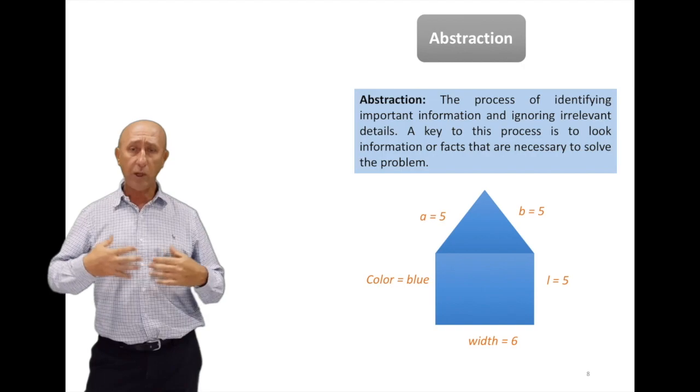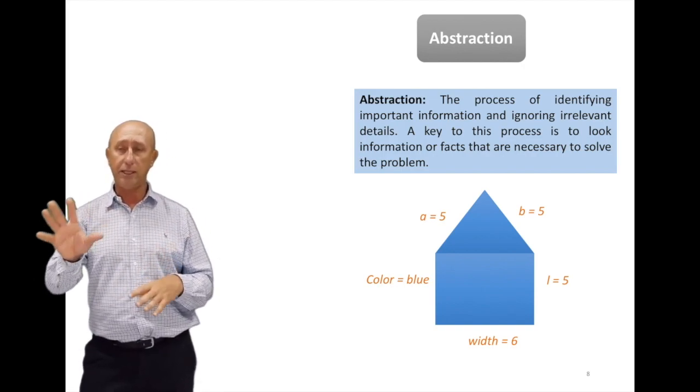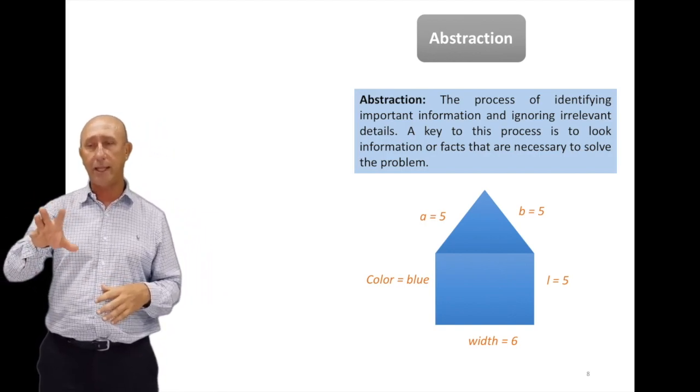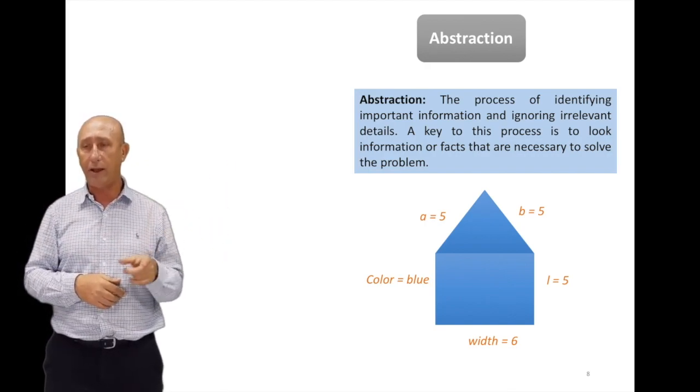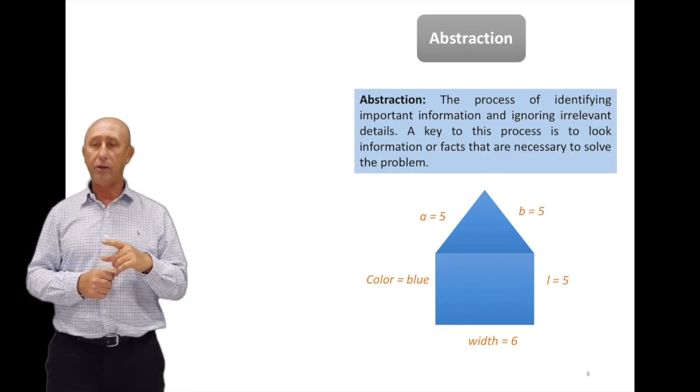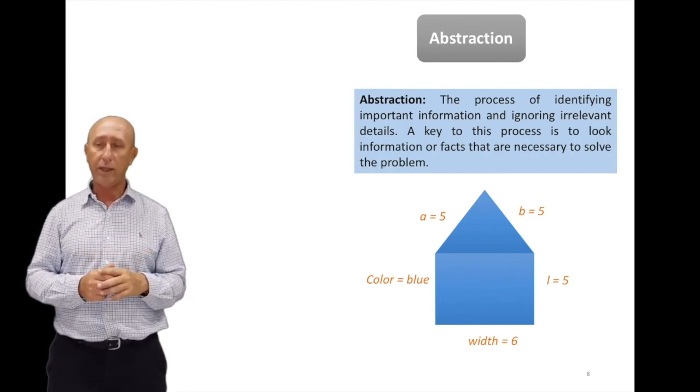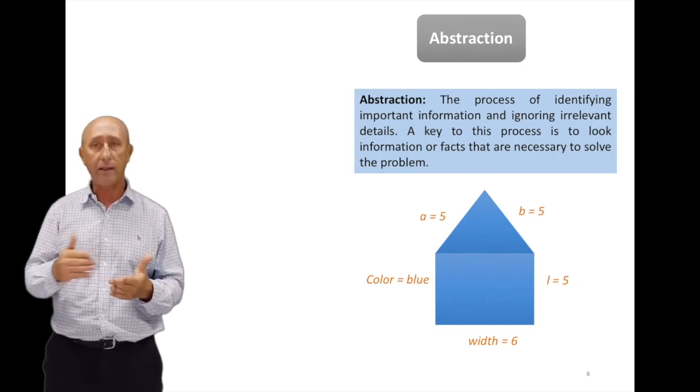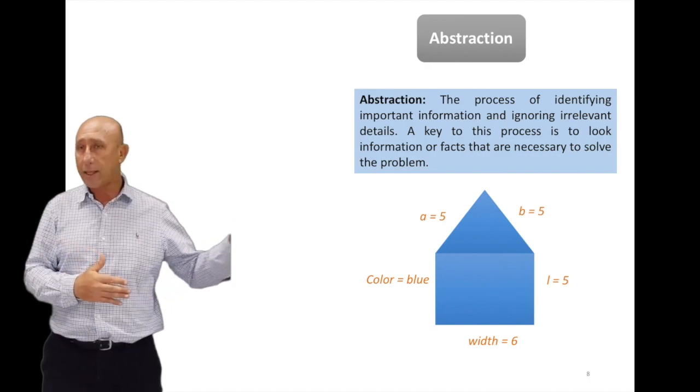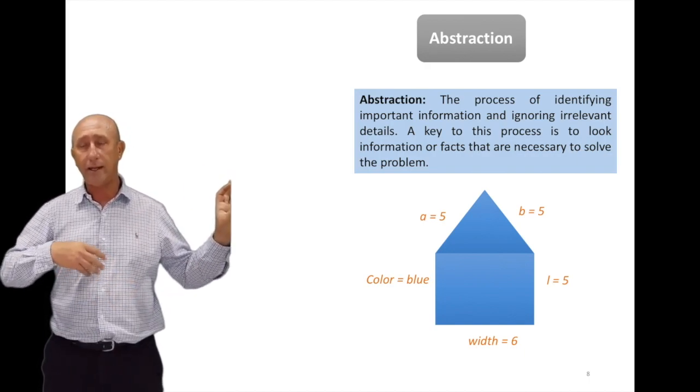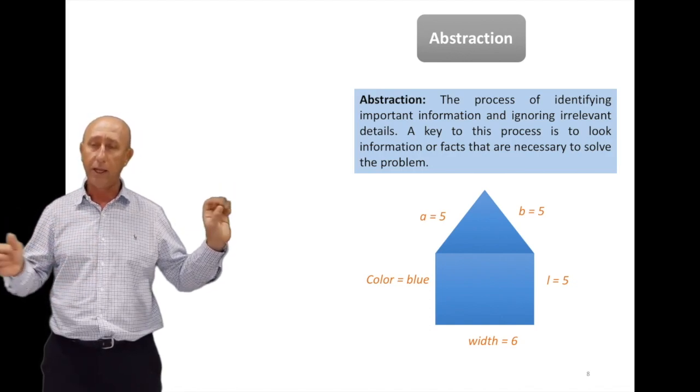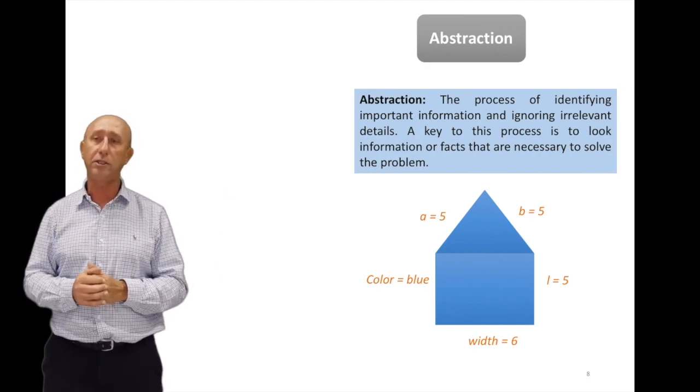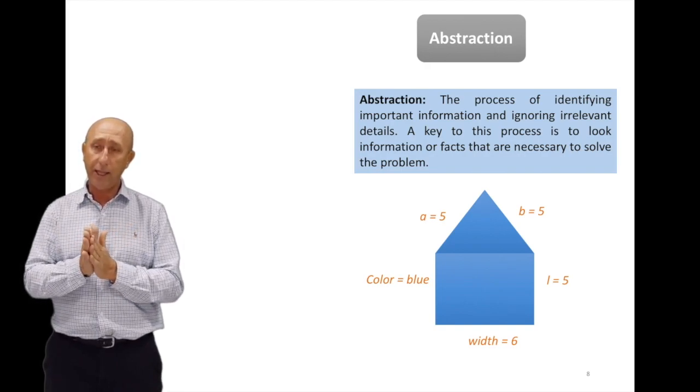Again, this is the problem that we had before. Usually when you're given a problem, you're given details, too much detail. I'm giving you a small example. In this shape, we're given that this side A is equal to 5, then you have B equal to 5 again, and the length is 5, and the width is 6, and then we have color blue. I know the equations to calculate the area of a rectangle and the area of a triangle are known. But color does not play any role. It does not affect the area, whether it's red, green, yellow, whatever. So I don't need to worry about the color blue. I need to focus only on the dimensions of the shape. And that was the abstraction.